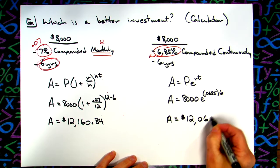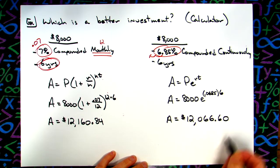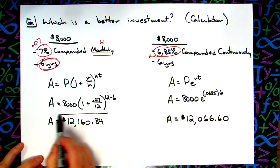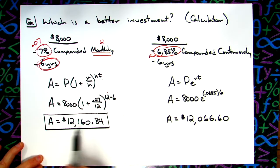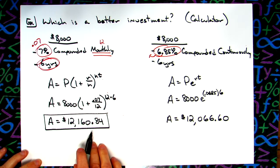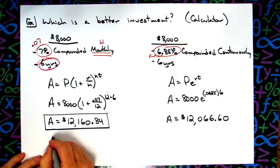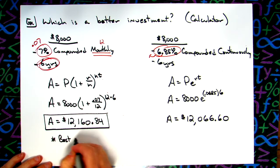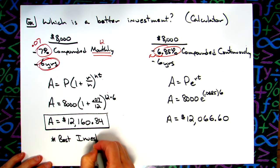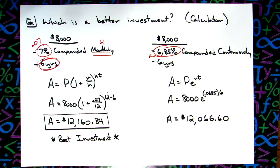Clearly using the seven percent compounded monthly is going to be the better investment. This was just a straight introduction to the formulas, practice with a calculator to see if we can plug the numbers in and pull the information out of the story problem. Just a first introduction to these type of formulas. Thanks for watching, if the videos are helping please share with your friends so they can benefit too.